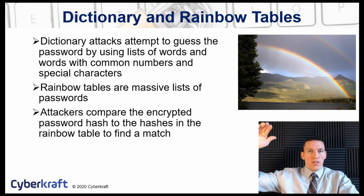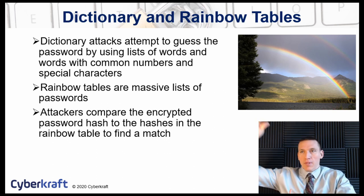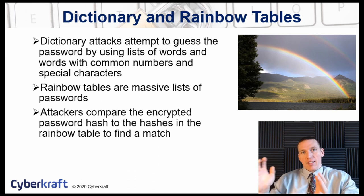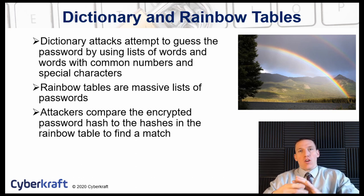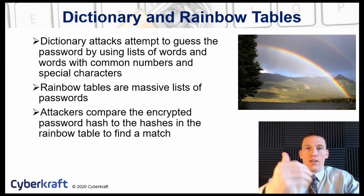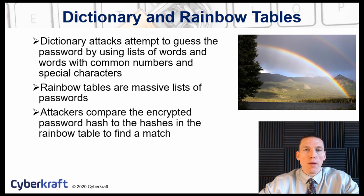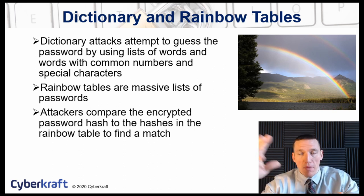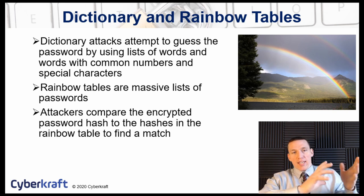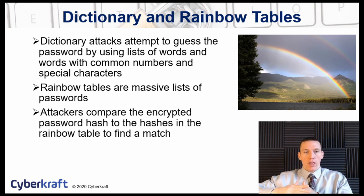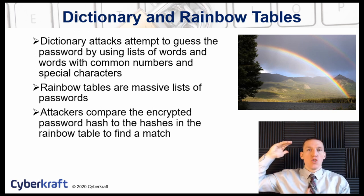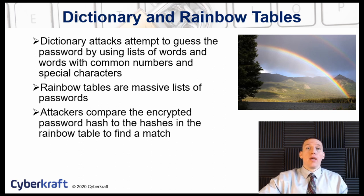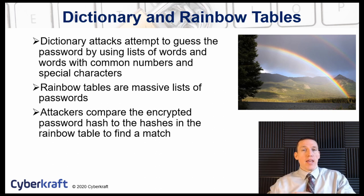Dictionary attacks use a large list of common words along with their hash values to attack a password hash or login mechanism. Rainbow tables are massive lists of password hashes — often many gigabytes in size. Attackers take an intercepted encrypted password hash and compare it against the rainbow table to find a match. If a match is found, they know the password.